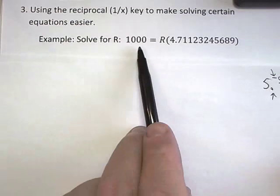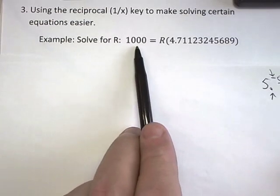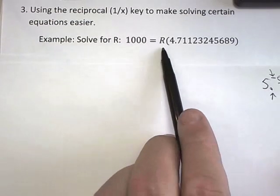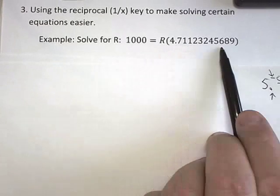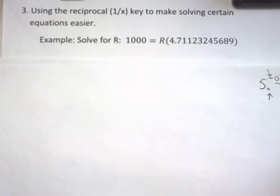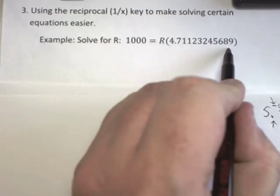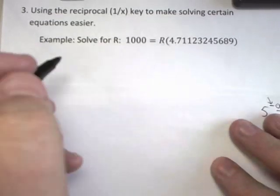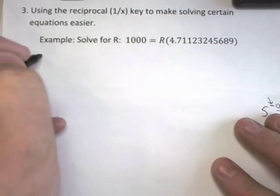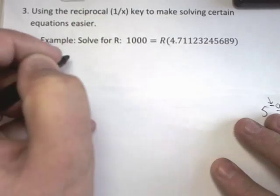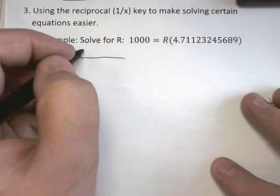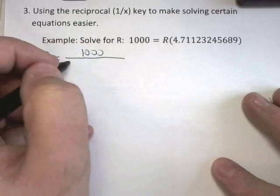we'll get to the point where we'll have an equation that might look something like this. It might say 1,000 equals capital R times this decimal value. Now we all know what that really means. To solve for R, I have to divide both sides by this 4.7, 1, 1, 2, 3, 2, 4, 5, 6, 8, 9. So what I'm really trying to do is